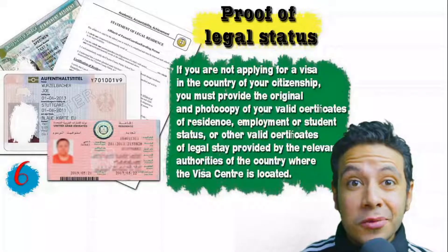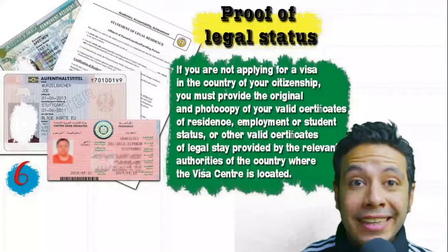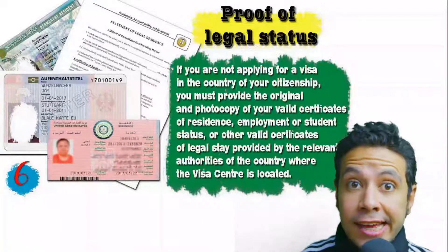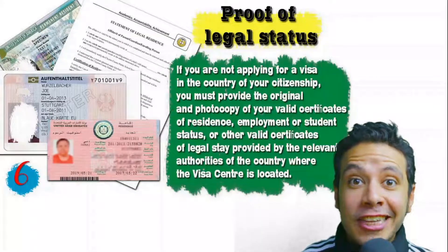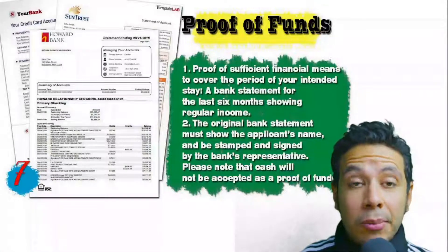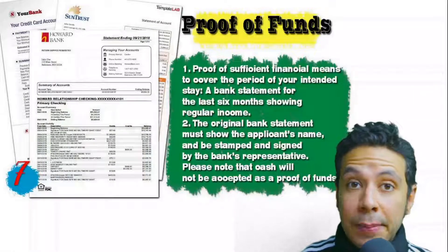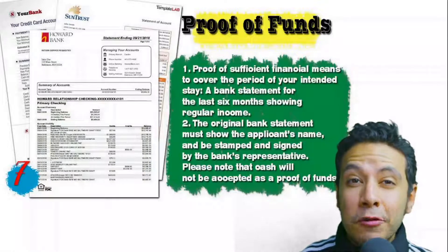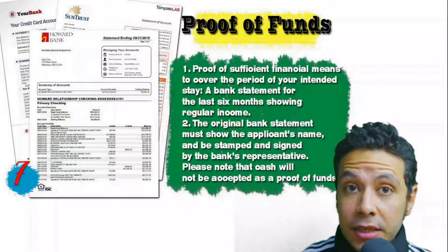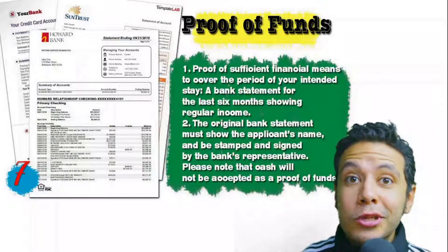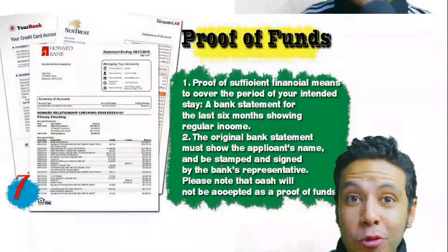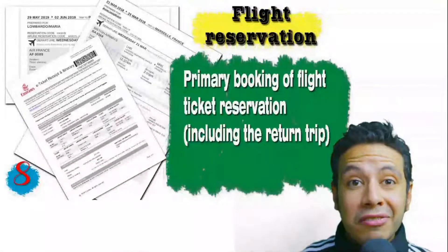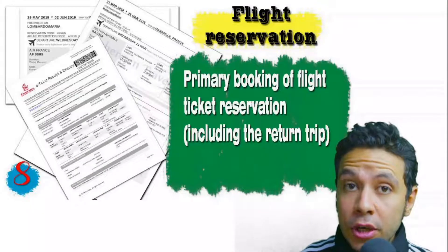If you are applying from a country different from your own, you will need to provide proof of legal status — a certificate of legal residence, and in some cases a valid residence visa for that country can also be accepted. You will also need to provide proof of sufficient funds, which is a bank statement showing your balance for at least six months. The original bank statement must show your name and be signed and stamped by the bank. Remember that cash will not be accepted as proof of funds.